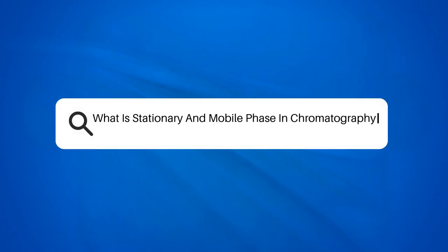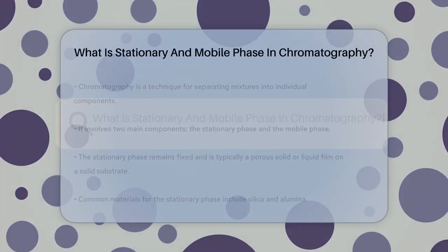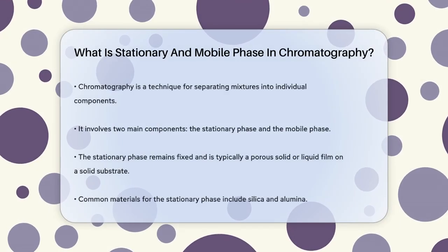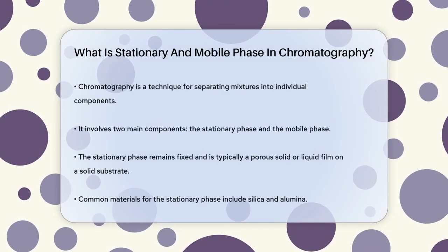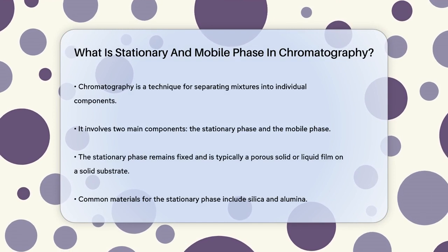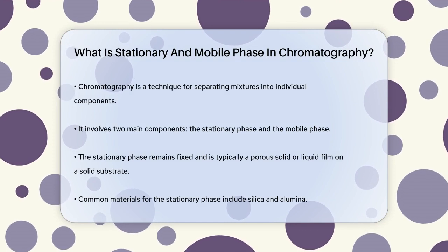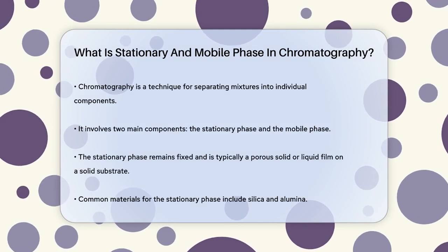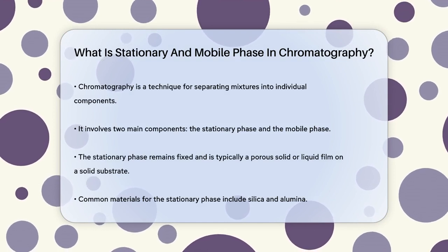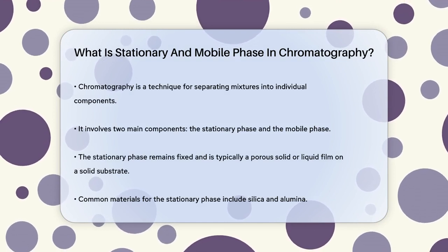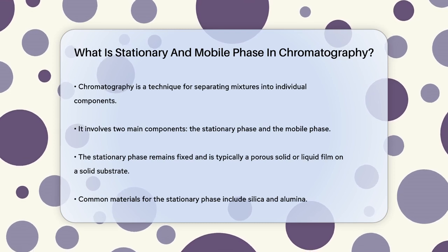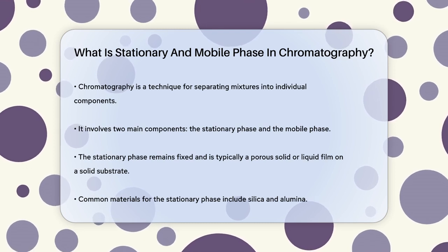What is stationary and mobile phase in chromatography? Imagine you have a mixture of different colors of paint, and you want to separate them into individual colors. Chromatography is a technique that helps you do just that, but instead of paint, it's used for separating various substances.